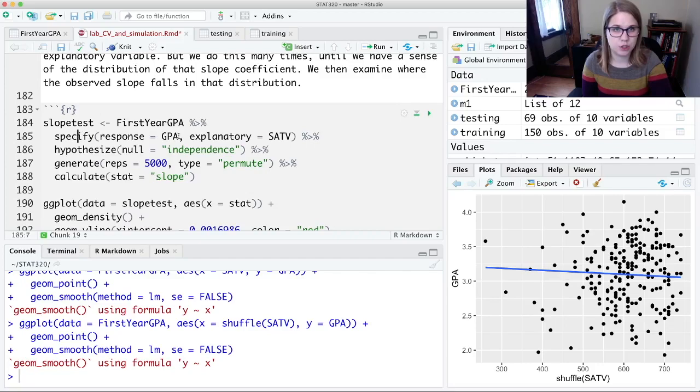and then we're going to specify the response is GPA and the explanatory is SATV. And then we're going to hypothesize our null hypothesis is that these two variables are independent.